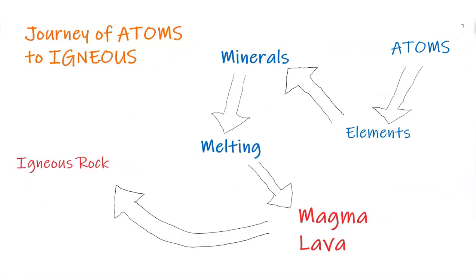So there you have it. Atoms go to elements. Elements construct to form minerals. Minerals can melt at certain temperatures, creating a melt material which is called magma and lava. And then magma and lava can consolidate, crystallize, and cool to form different types of igneous rock. Thank you so much for watching, and I hope to see you in the next video.